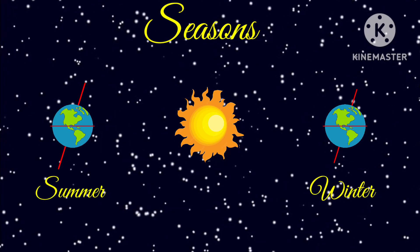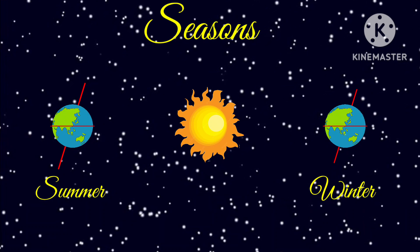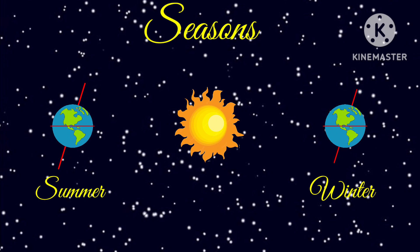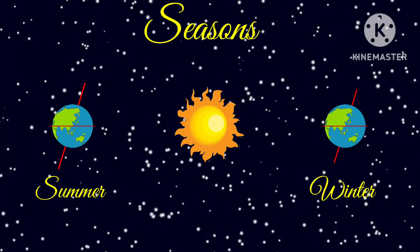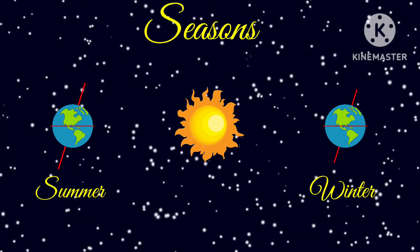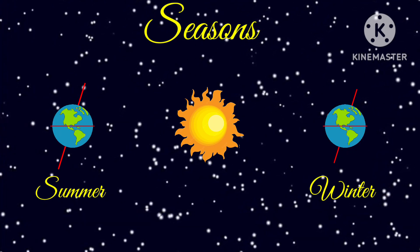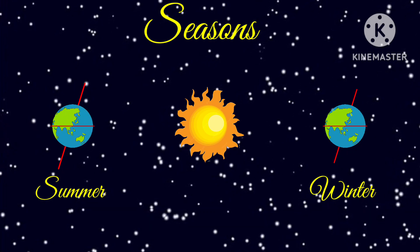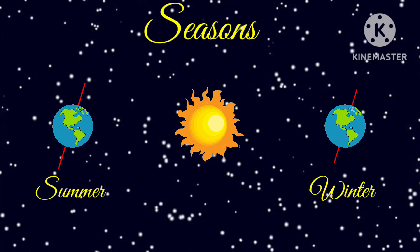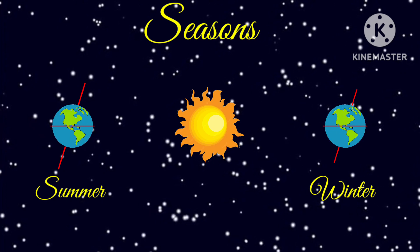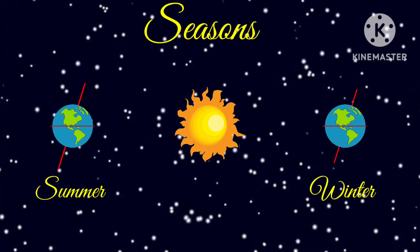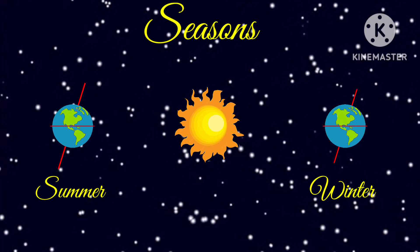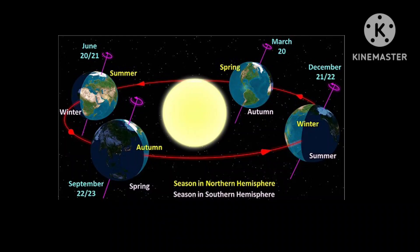The northern hemisphere, for example, is tilted towards the sun during the summer months, meaning longer days and hotter weather. And during winters, it is tilted away from the sun, meaning shorter days and colder temperatures. This also means that the northern and southern hemispheres experience the seasons at different times. When it is summer in the northern hemisphere, it is winter in the southern hemisphere, and vice versa. Refer to this image for better understanding.